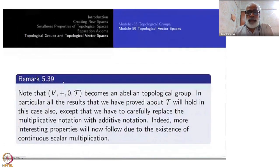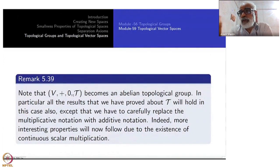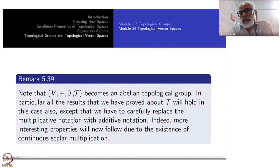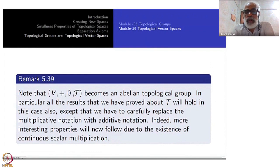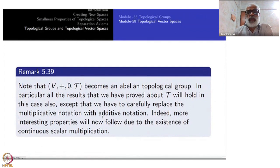Notice that if we just ignore the scalar multiplication, what we have is an abelian topological group. So in particular all results we proved about topological groups will hold here, except that we have to carefully replace multiplicative notation with additive notation. We expect stronger results to happen because of the existence of this continuous scalar multiplication — and soon we will see that that is indeed true.